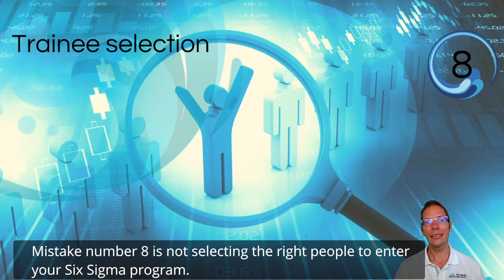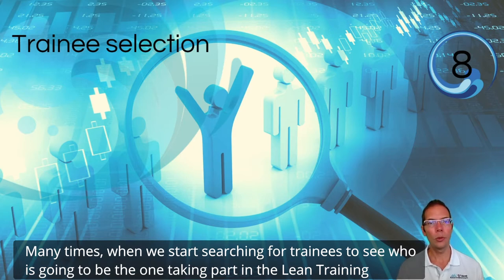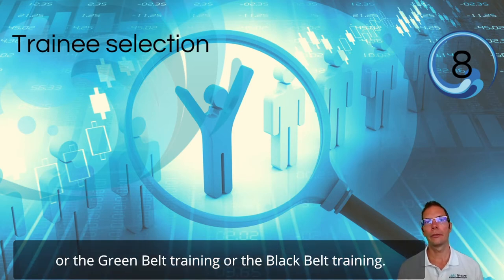Mistake number eight is not selecting the right people to enter your Lean Six Sigma program. Many times when we start searching for trainees — who's going to take part of the Lean training, who's going to be part of the Green Belt training, who's going to take part of the Black Belt training —